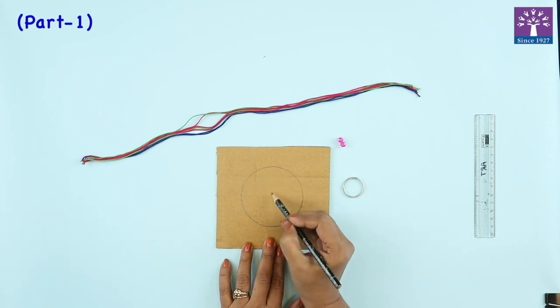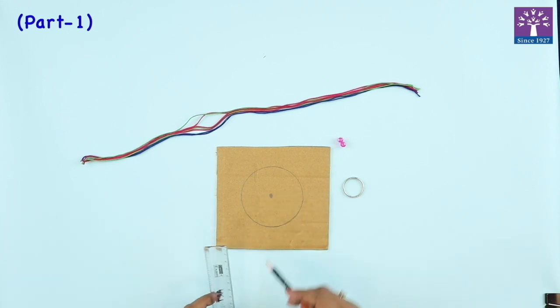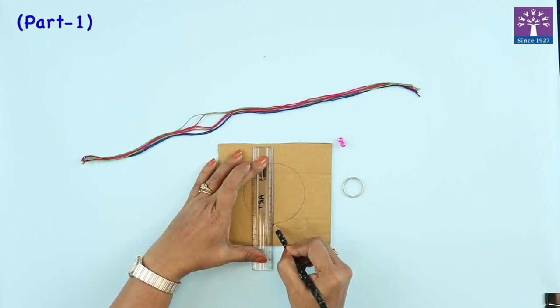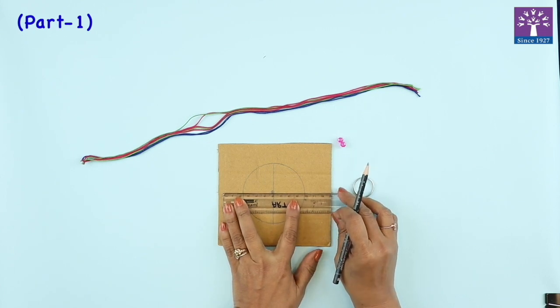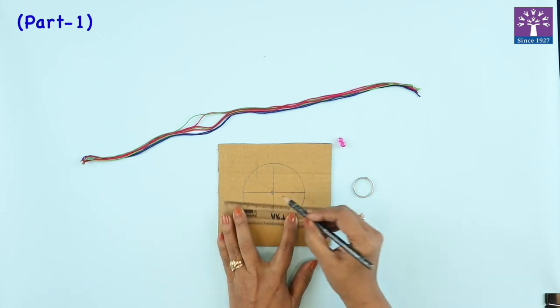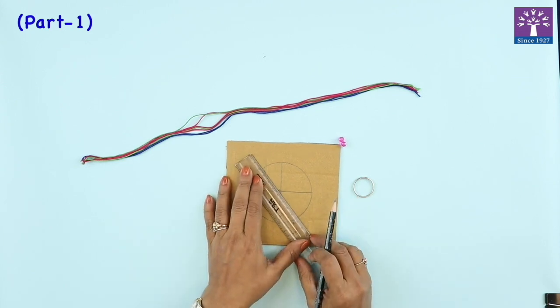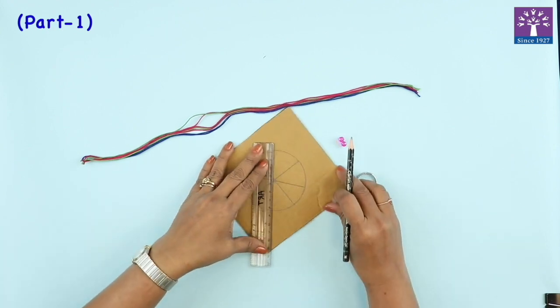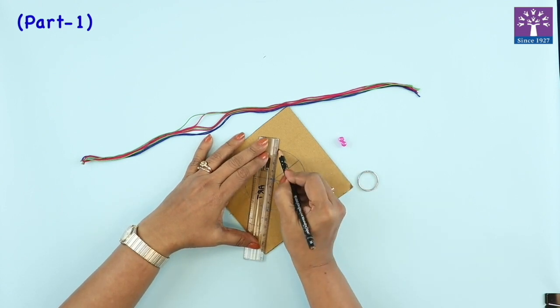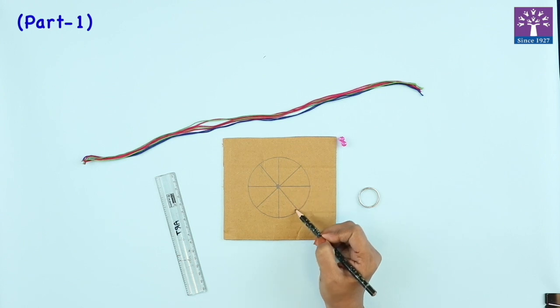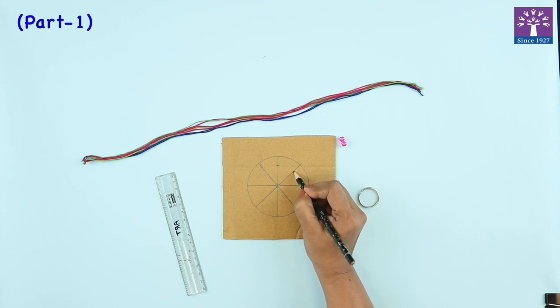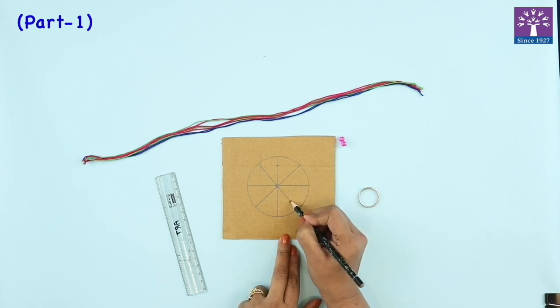Now, approximately try to find the center. Once you get the center of the circle, we will draw eight lines. First is a vertical, next is the horizontal from the center, then two diagonal lines so they will be at equal distance: one, two, three, four, five, six, seven, eight. Mark approximate size of nearly one or two centimeters till here.